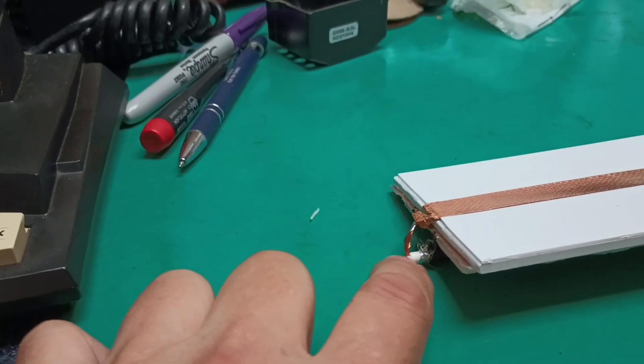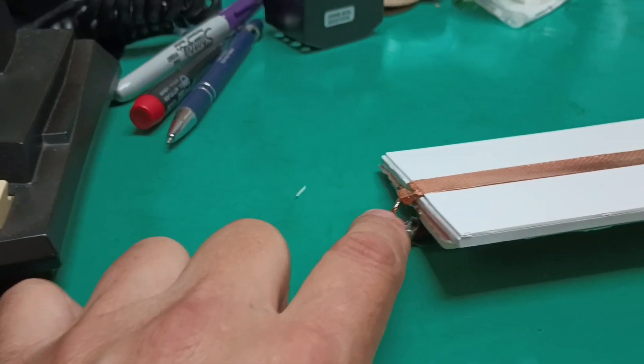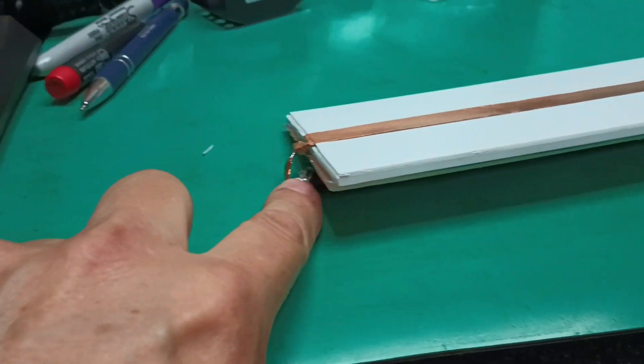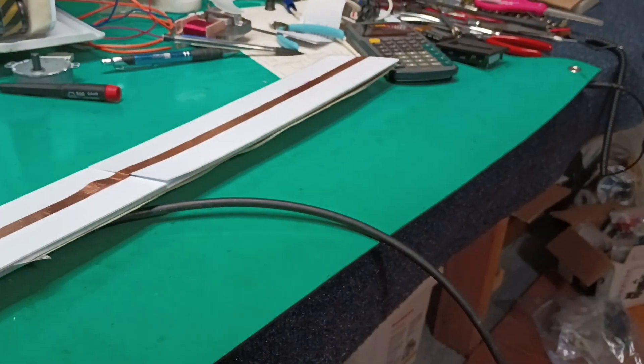So energy coming up that cable is partly reflected at this joint, and the same on the other end.